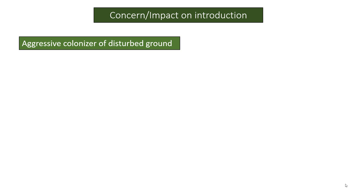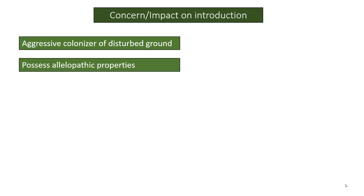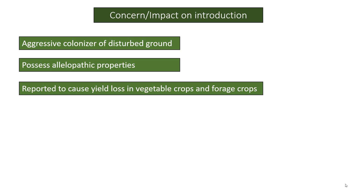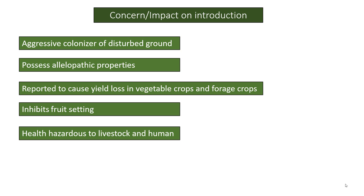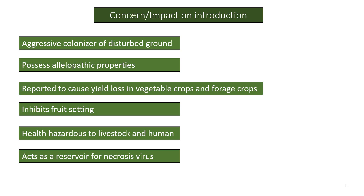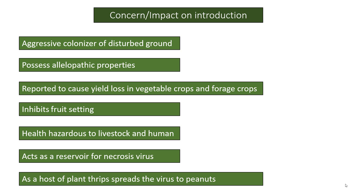Concerning its impact on introduction: it is an aggressive colonizer of disturbed ground and possesses allelopathic properties. It is reported to cause yield loss in vegetable crops and forage crops, and inhibits fruit setting. It is considered hazardous to livestock and humans, acts as a reservoir for necrosis virus, and serves as a host of plant thrips, which spreads the virus to peanuts.